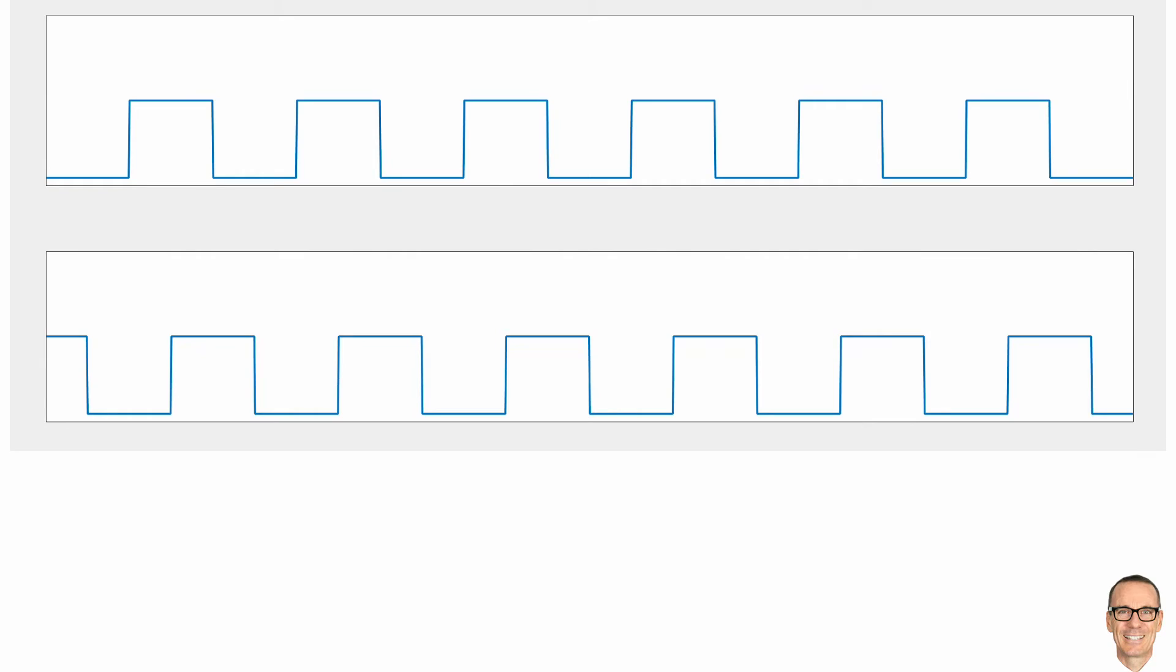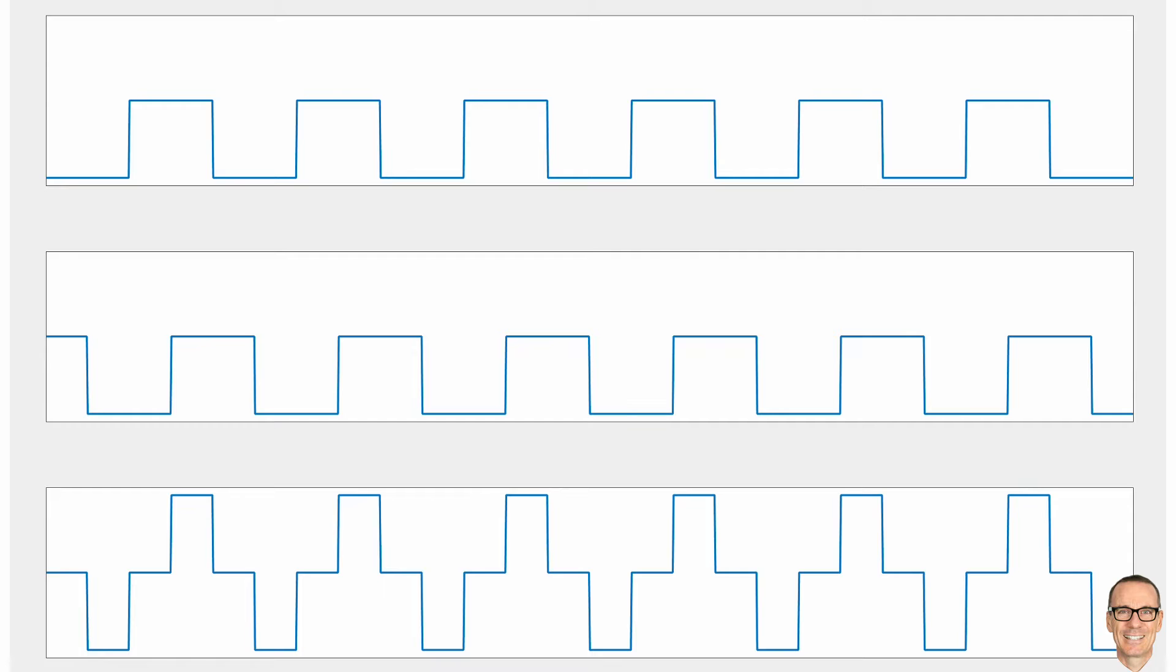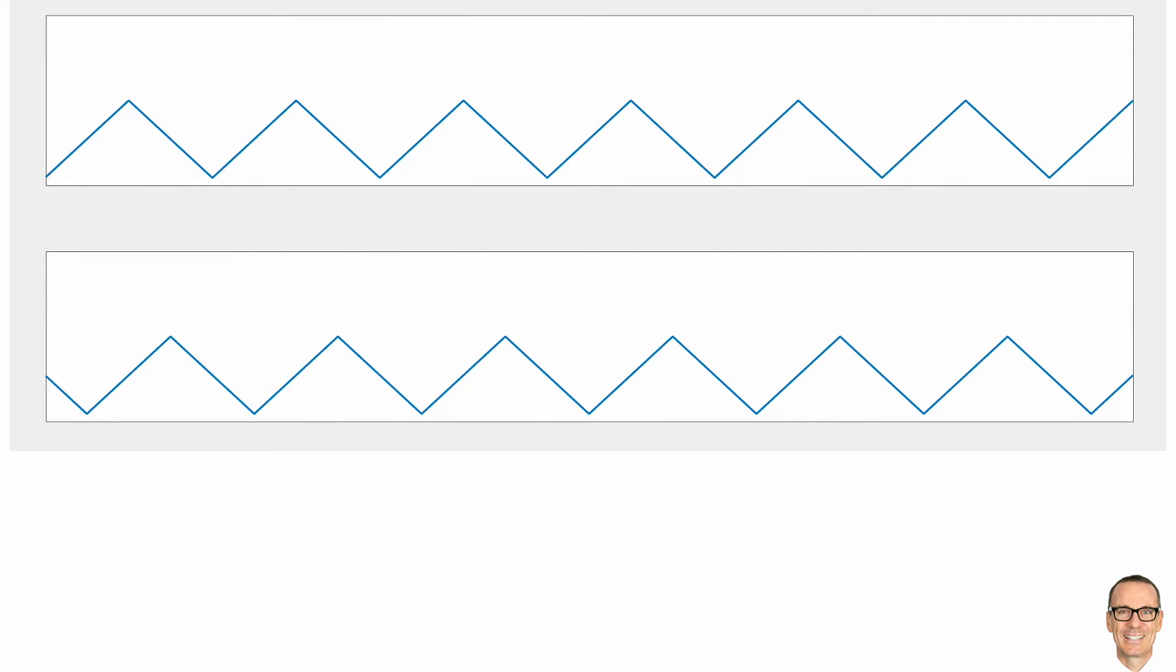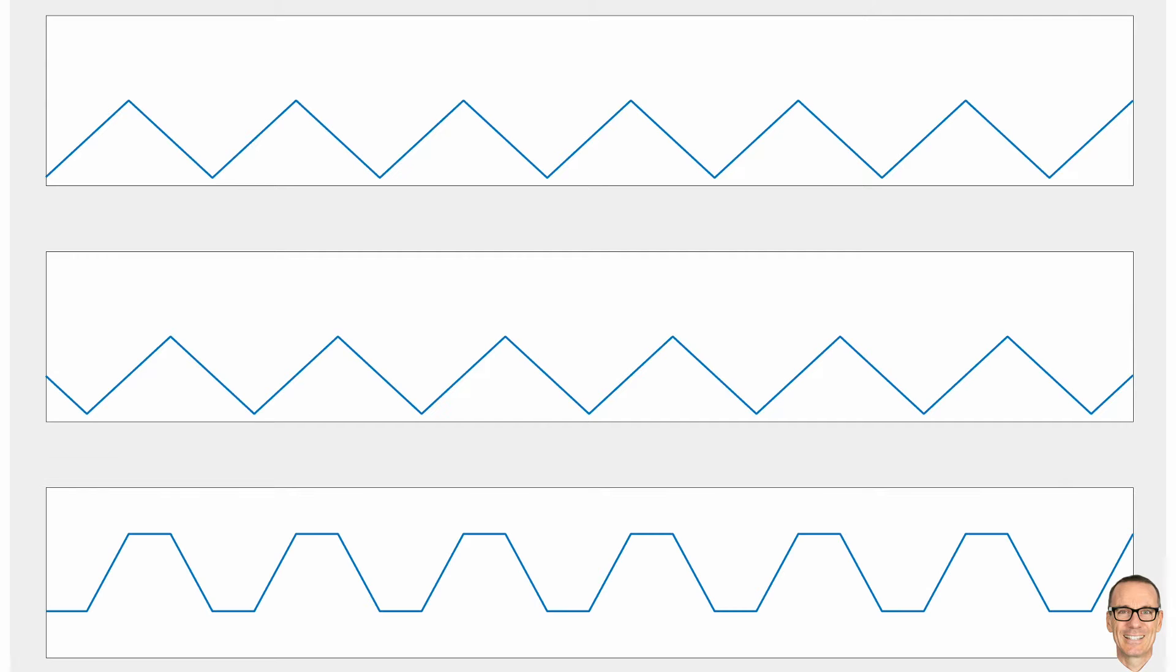Because it's not the case for square waves. Here we have two offset square waves, and when we add them together, we don't get a square wave. The same for triangular waves. Two offset triangular waves. When we add them together, we don't get a triangular wave.